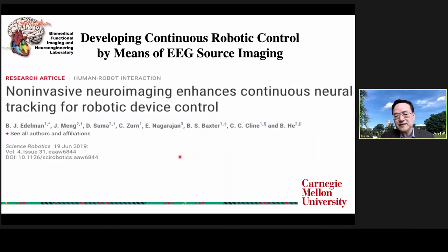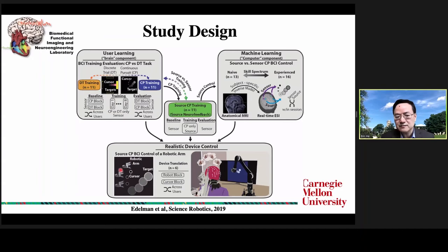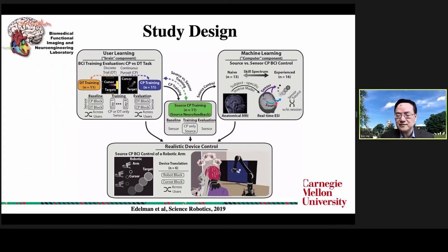In more recent work, we incorporated EEG source imaging technology for BCI — not just sensor space but also performing source imaging. This slide illustrates the study design. An important development was combining user learning and machine learning. For user learning, we designed human experiments including the conventional center-out discrete trial and a continuous pursuit task, where a random generator moves a cursor around the screen and subjects must control it. We also incorporate anatomical MRI for EEG source imaging in individual subjects and compare sensor-based versus source-based BCI.